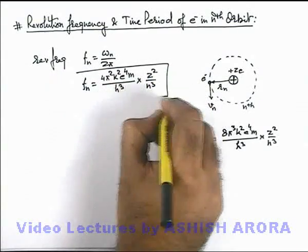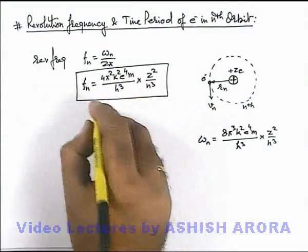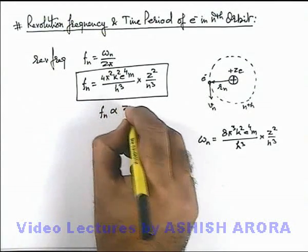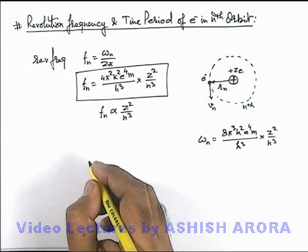So this is the expression we use for revolution frequency and apart from constant term we can write angular frequency is proportional to z² over n³.